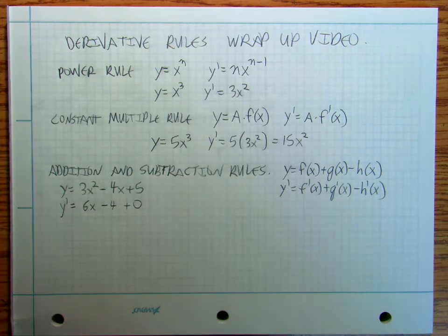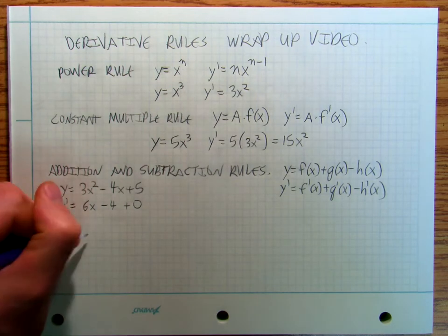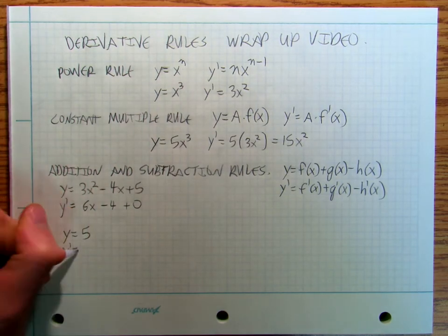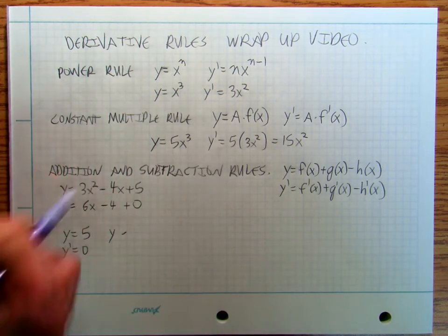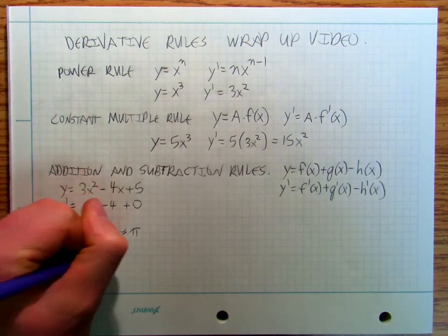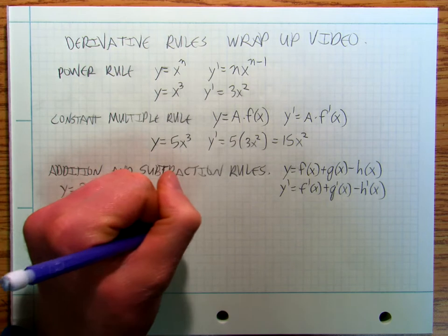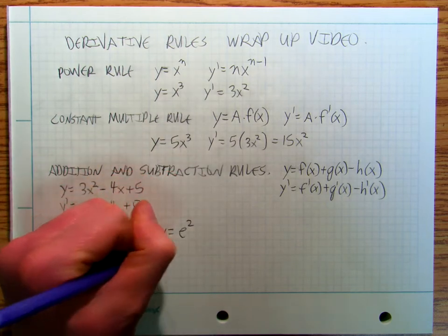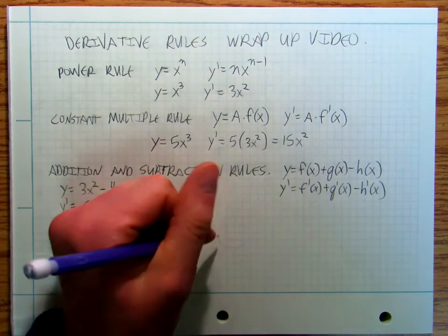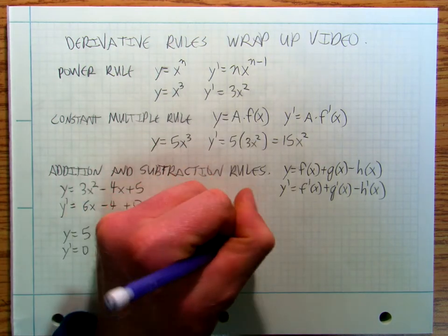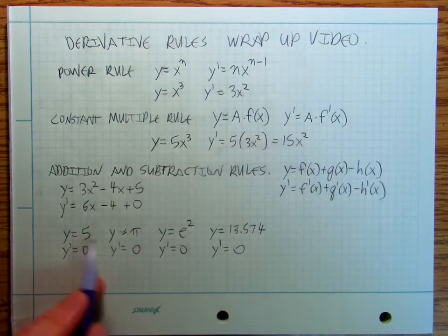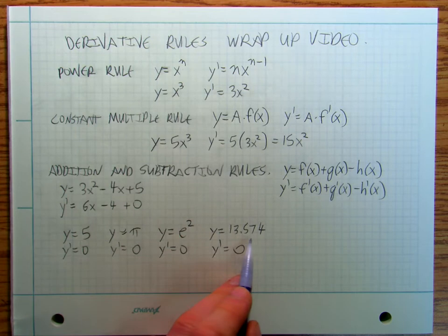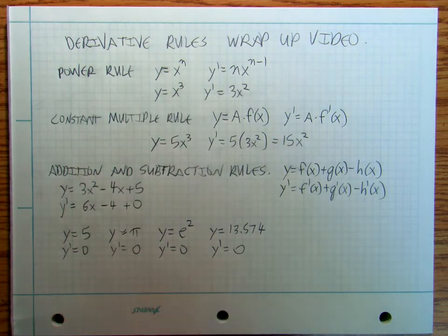A few things to remember that everybody always messes up: y equals five, y prime equals zero. y equals pi, y prime equals zero. y equals e squared, y prime equals zero. y equals thirteen point five seven four, y prime equals zero. Five pi, e squared, thirteen point five seven four — they're all just numbers. The derivative of a number is just zero.